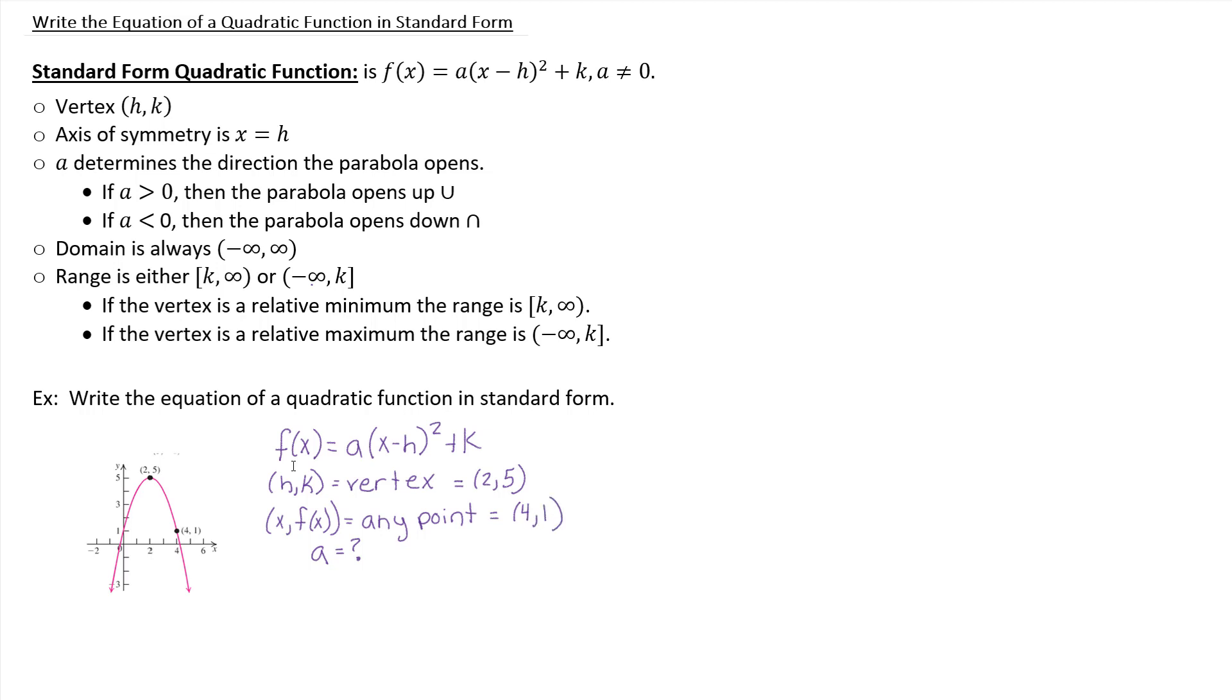And then again, we don't know the value of a. So at the end of the day, we could kind of fill in what we do know. So f of x is 1. A, we don't know. So we'll keep a. x is 4. We're supposed to subtract off h. So subtract off 2. That whole value is squared. And then we add our k. So our k is 5.